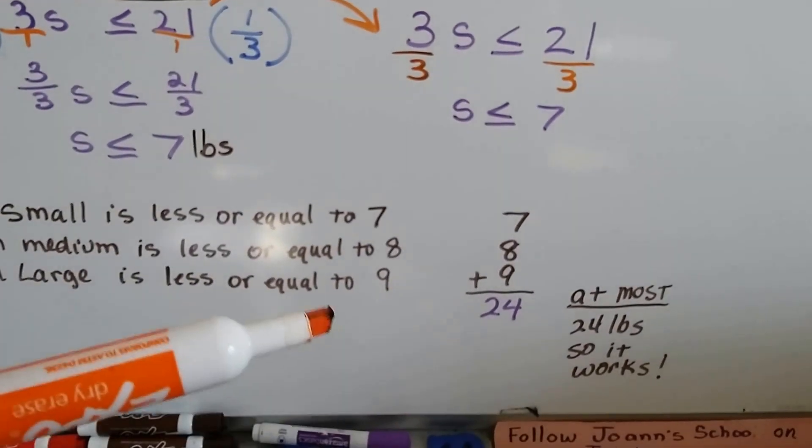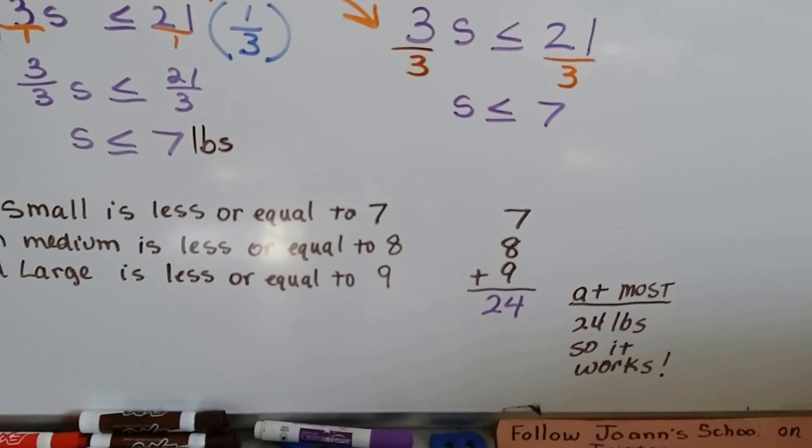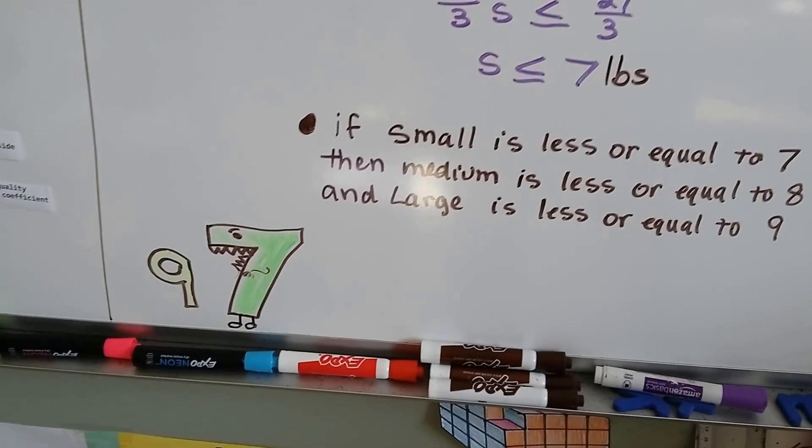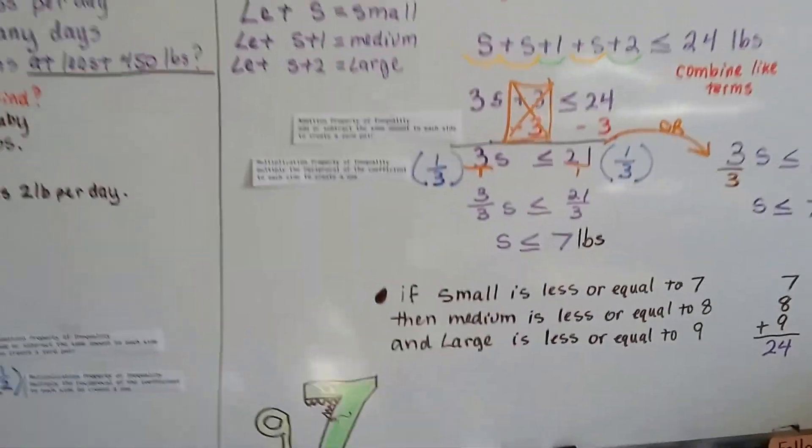Now, do you know why 8 is afraid of 7? It's a very old joke. Because 7, 8, 9...oh, bad jokes.